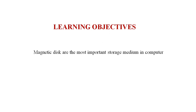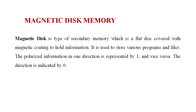So what are the learning objectives in this session? Magnetic disks are the most important storage medium in the computer. First, we are discussing what is magnetic disk memory. Magnetic disk is the type of secondary memory which is a disk covered with a magnetic coating to hold the information. It is used to store various programs and files.